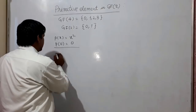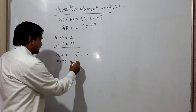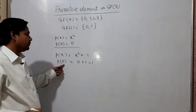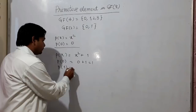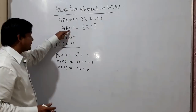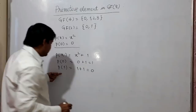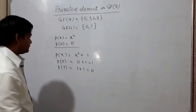Now I take P(x) = x² + 1. Checking P(0): 0 + 1 = 1, which is not 0, so 0 is not a root. Checking P(1): 1² + 1 = 1 + 1 = 2, and 2 mod 2 = 0, since the base field is GF2. So 1 is a root of x² + 1, meaning it can be factorized — discard it.